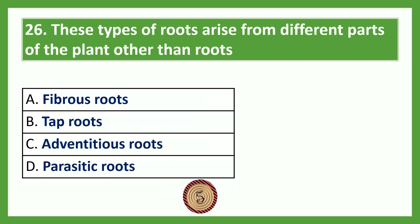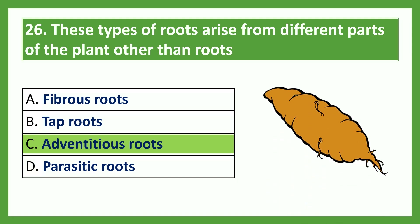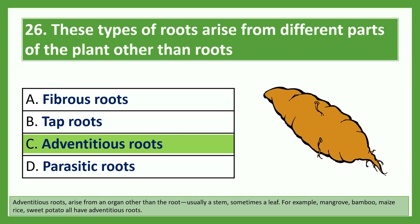These types of roots arise from different parts of the plant other than the roots. Option A: fibrous roots; Option B: tap roots; Option C: adventitious roots; Option D: parasitic roots. The answer is adventitious roots. Adventitious roots arise from an organ other than the root — usually a stem, sometimes a leaf. For example, mangrove, bamboo, maize, rice, wheat and potato all have adventitious roots.